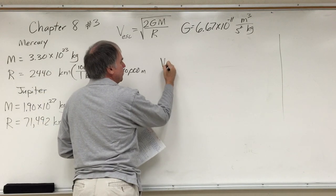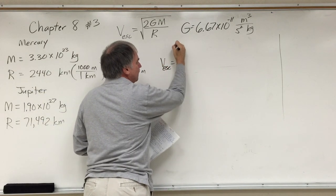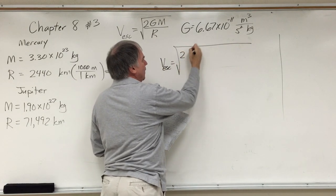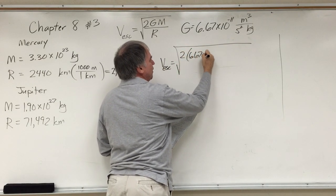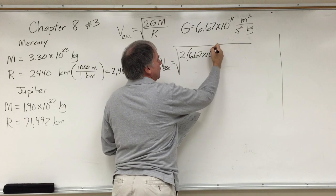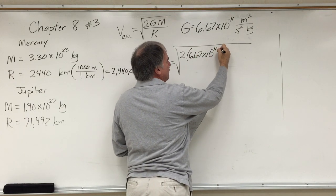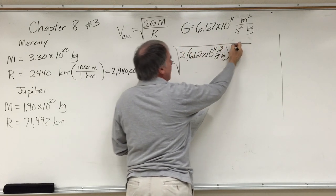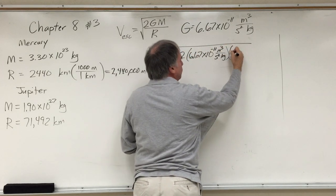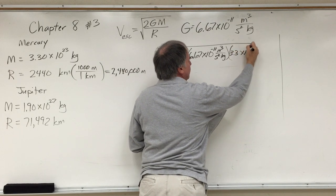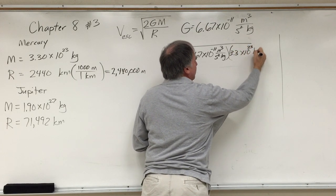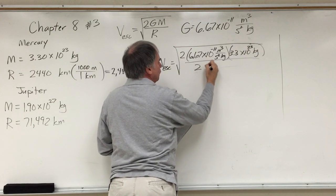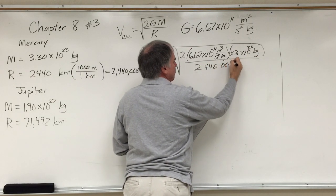I'll put in these numbers. Let's do it here. Square root of 2 times the 6.67 times 10 to the minus 11 meters cubed second squared kilograms times the mass, 3.3 times 10 to the 23 kilograms, divided by the radius 2,440,000 meters.